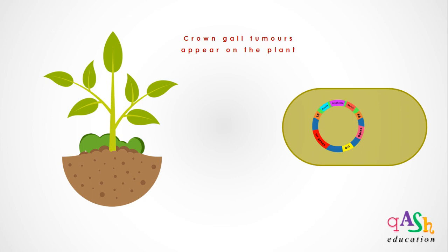After integration of the single-stranded T-DNA copy into the plant genome, the genes for auxin, cytokinin, and opine synthesis are expressed, and the plant cell undergoes uncontrolled division leading to the formation of crown gall tumors. This is how transformation is accomplished by Agrobacterium in the presence of a Ti plasmid.